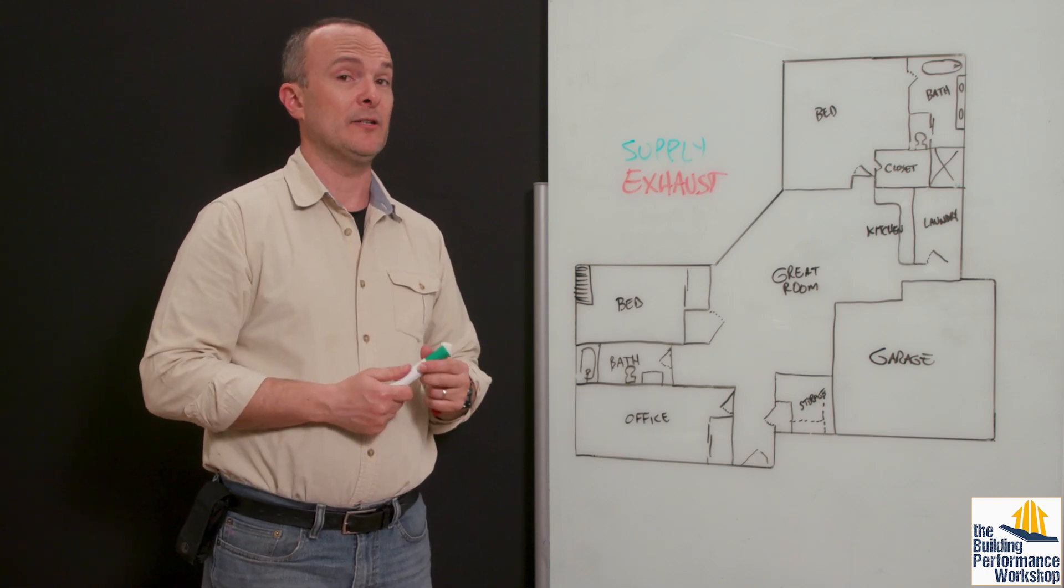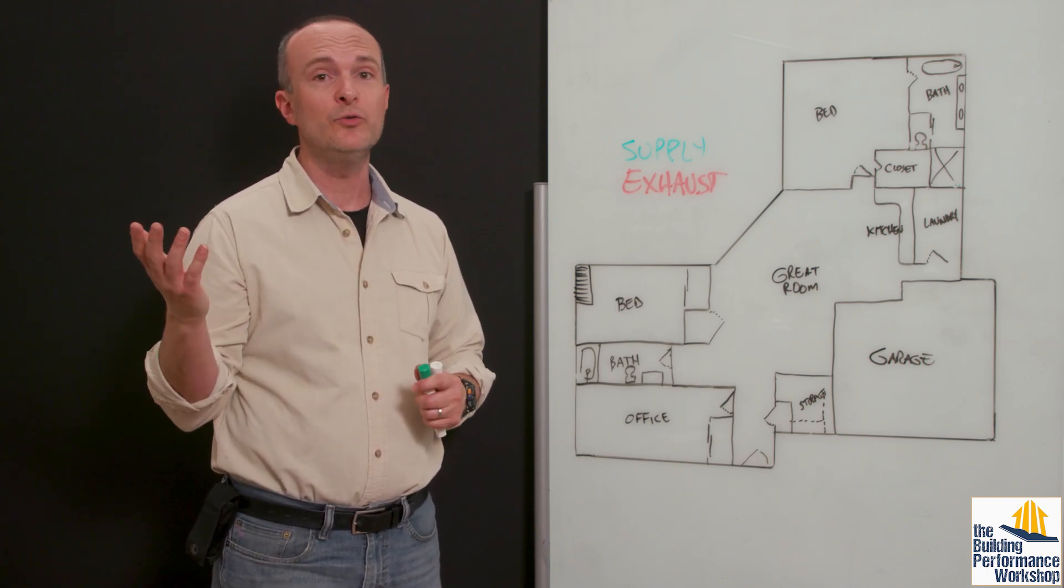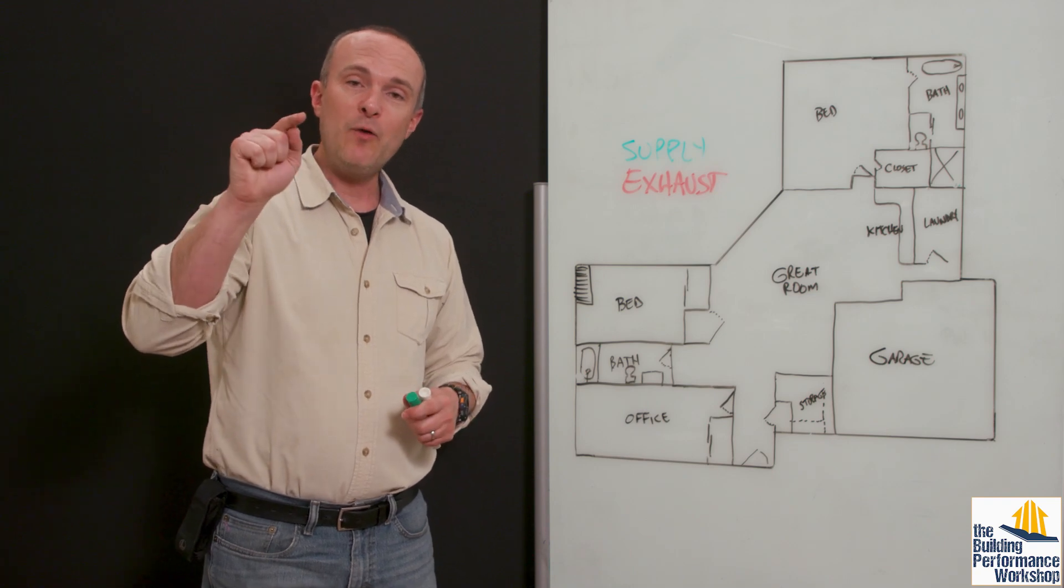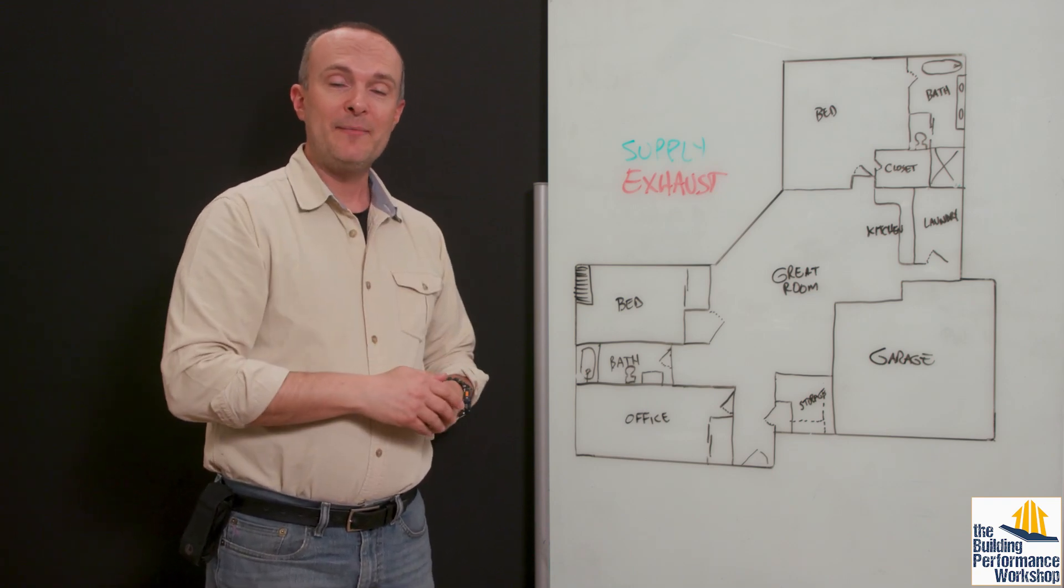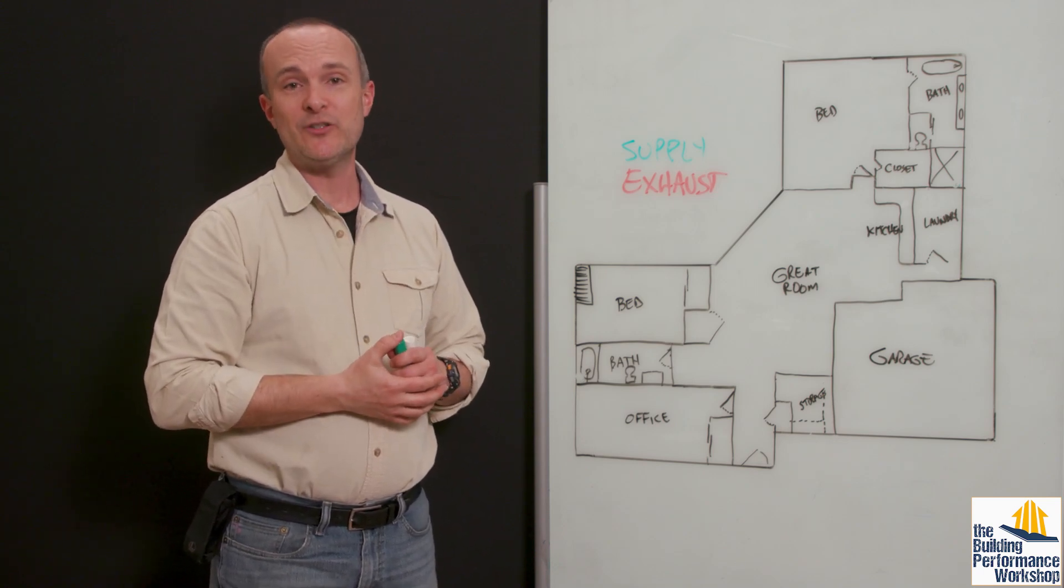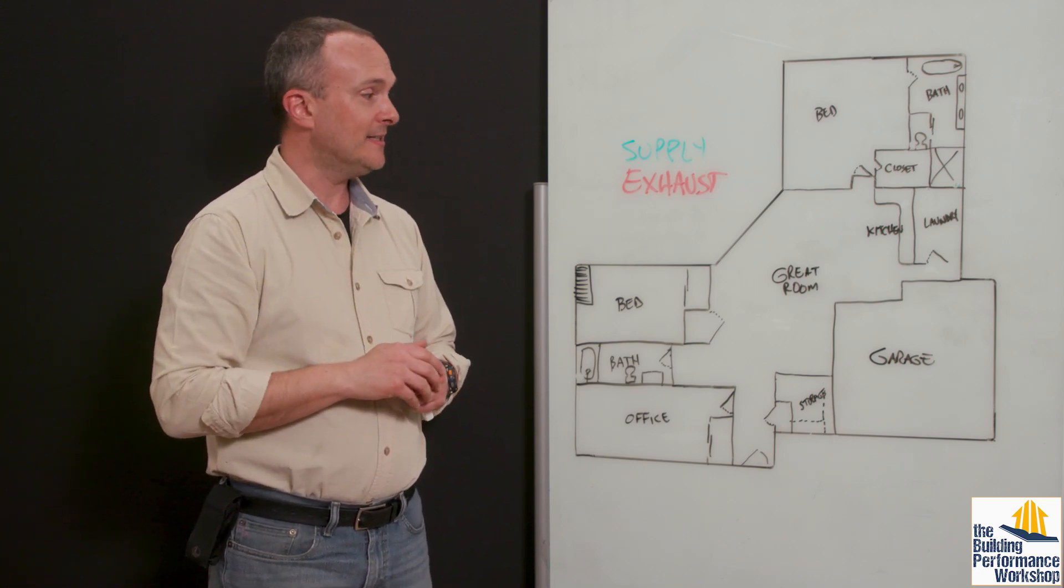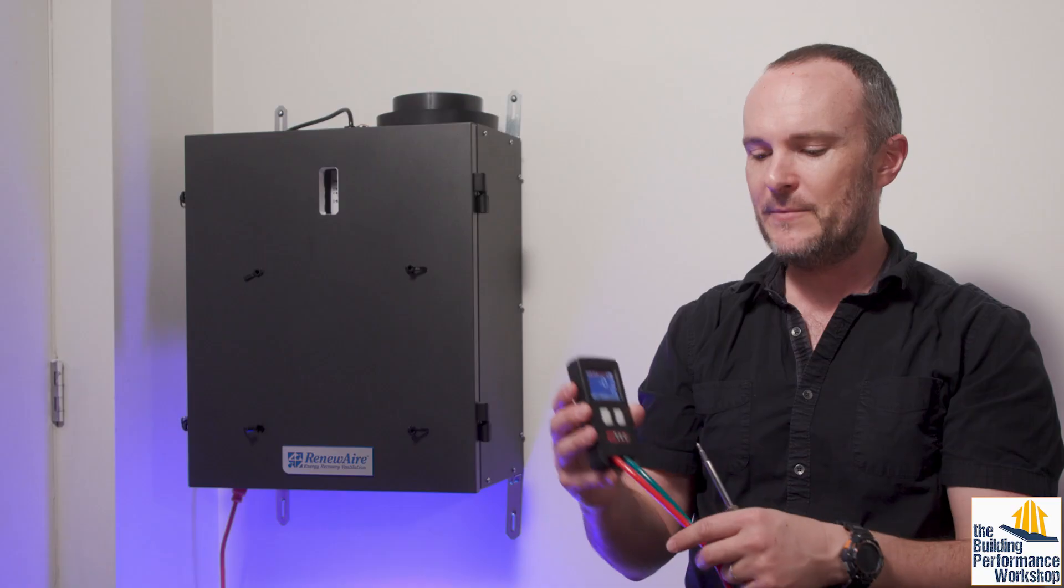Some of them, like the Broan AI series, makes it really easy to do that. You don't want 120 CFM going out and 130 coming in. And it just says okay great, I'll do that. And it tests it twice a second in the case of the AI series. In other cases, you have to commission.